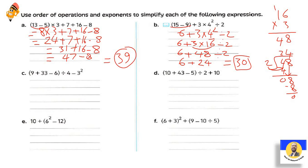Letter C: 9 + (33 - 6) ÷ 4 - 3². الـBracket الأول: 33 - 6 = 27 ... أو 33 + 9 = 42. 42 - 6 = 36. بعدين الـPower: 3² = 9. بعدين يبقى 36 ÷ 4 - 9. الـDivide الأول: 36 ÷ 4 = 9. يبقى 9 - 9 = 0.